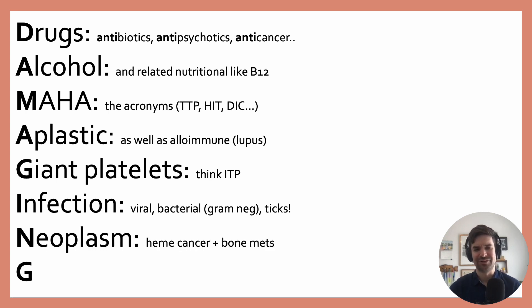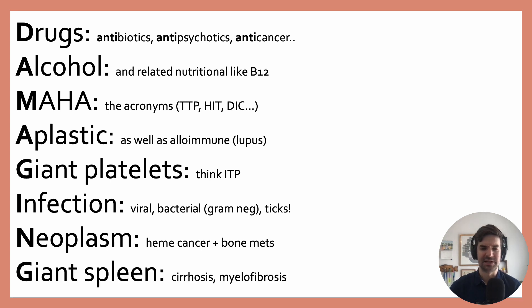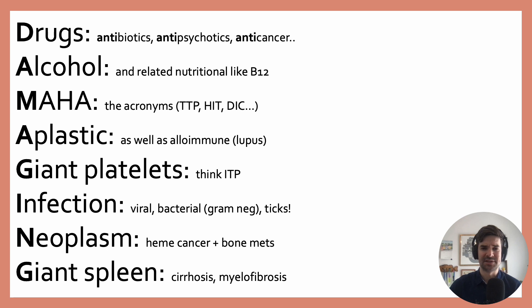N stands for neoplasm — especially hematologic malignancies can present with thrombocytopenia. And then G is giant spleen, thinking cirrhosis or myelofibrosis, both of which can lead to thrombocytopenia because of the splenomegaly that ensues.